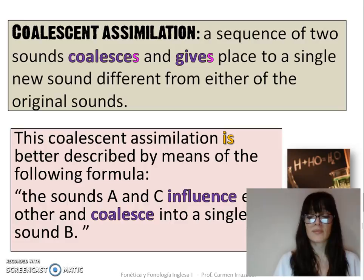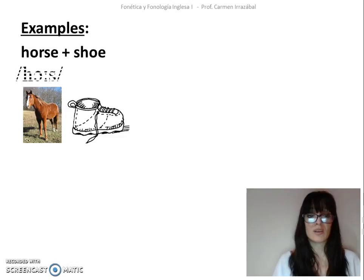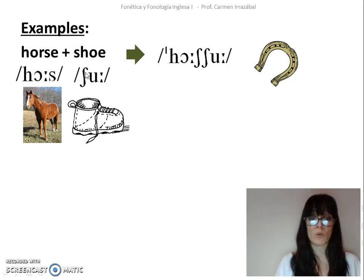If the words horse and shoe are juxtaposed, that is to say, are put together in context, the fortis alveolar fricative sound may change into a palatal alveolar fricative itself, because of the influence of the following palatal alveolar fricative.